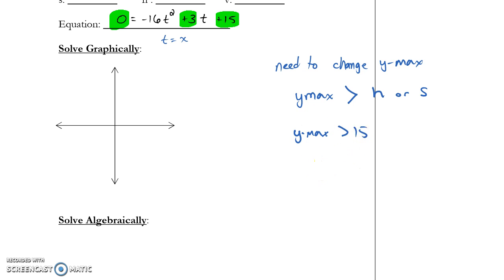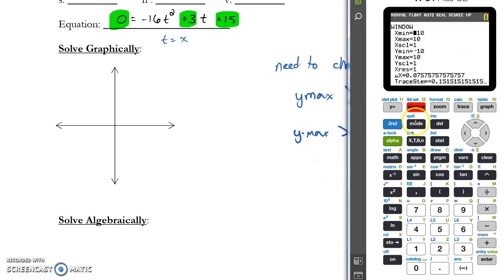So I might choose something like 20. That just means go to your window, scroll down to your y max, and type in something bigger than either h or s, 20, and then hit graph again.